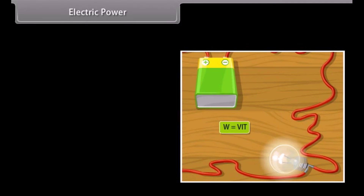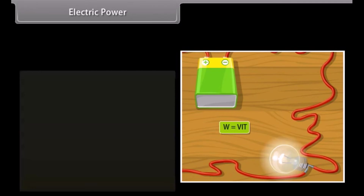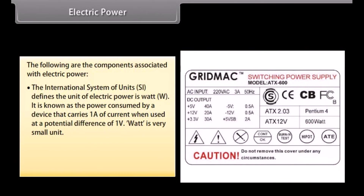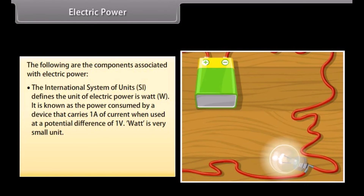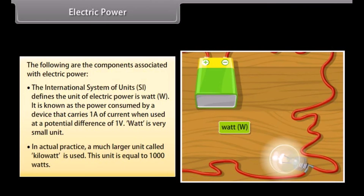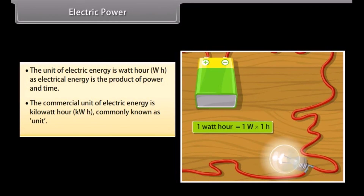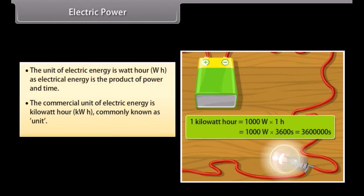Electric power is the rate at which electric charge is transferred by an electric circuit. The International System of Units (SI) defines the unit of electric power as the watt (W). It is the power consumed by a device that carries 1A of current when used at a potential difference of 1V. The watt is a very small unit; in practice, a much larger unit called the kilowatt is used, equal to 1000 watts. The unit of electric energy is the watt-hour (Wh). Since electrical energy is the product of power and time, the commercial unit of electric energy is the kilowatt-hour (kWh), commonly known as a unit.